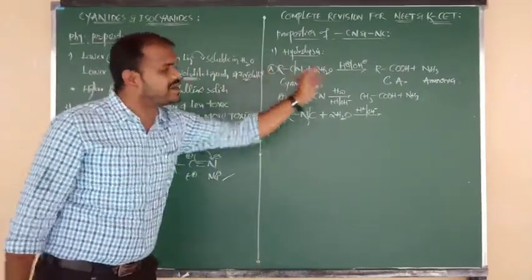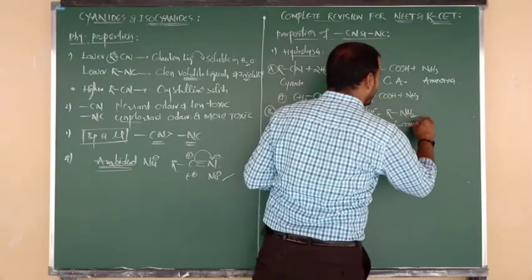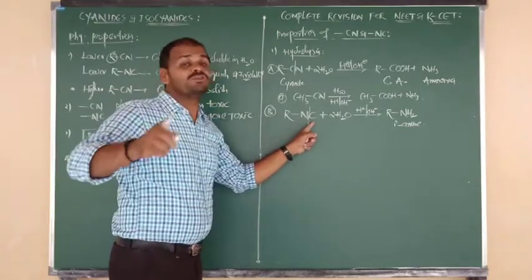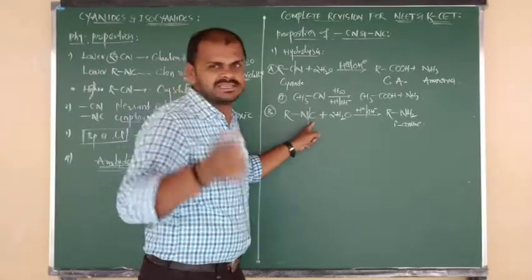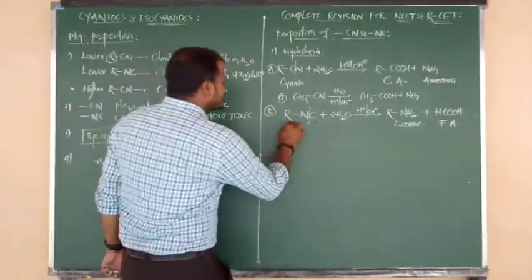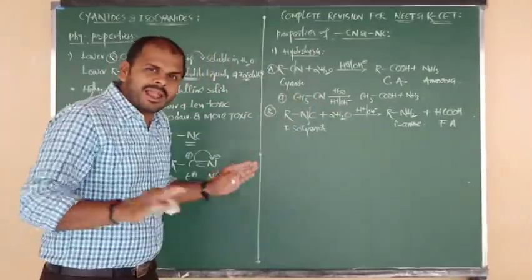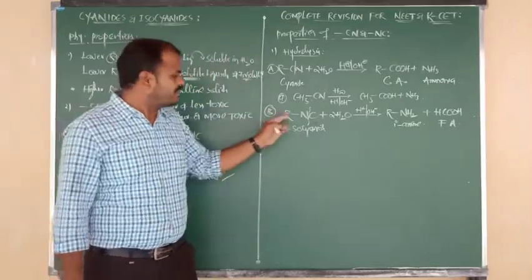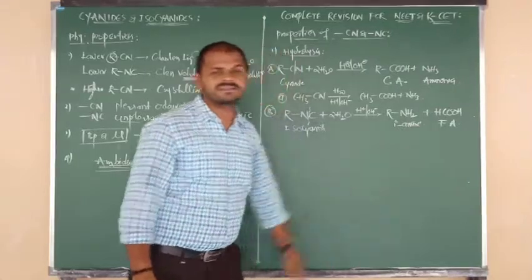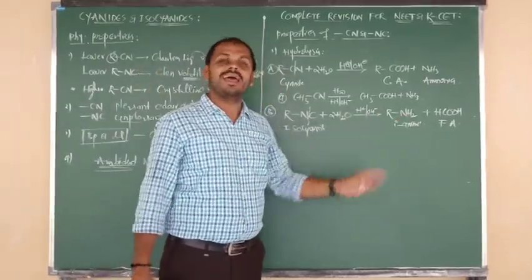Hydrolysis of isocyanides: R-NC upon hydrolysis with two moles of H2O in acidic or basic medium. Here the RC unit converts to carboxylic acid but the N unit remains as an amine. The free carbon atom becomes formic acid (HCOOH). So isocyanide upon hydrolysis gives primary amine + formic acid.